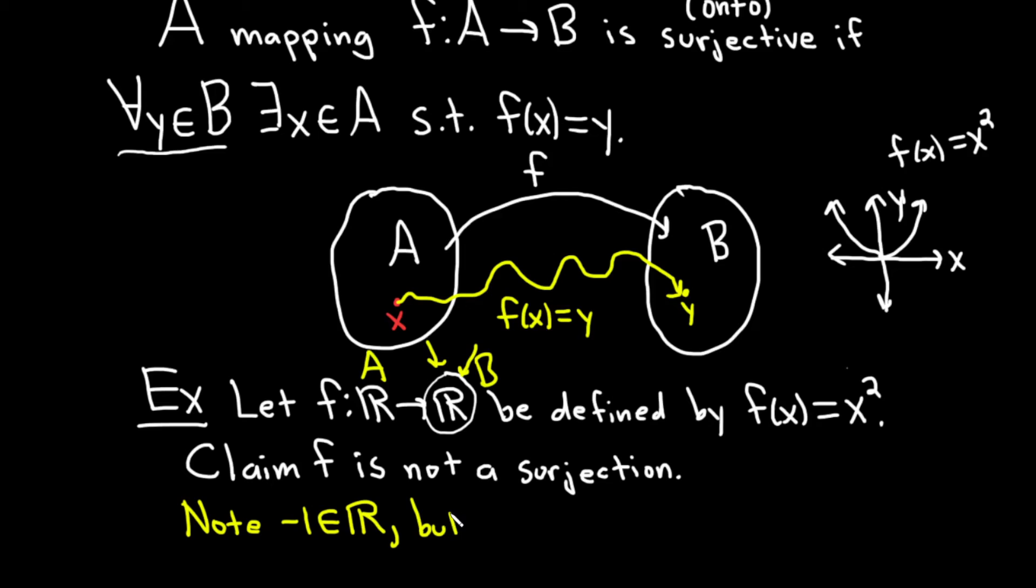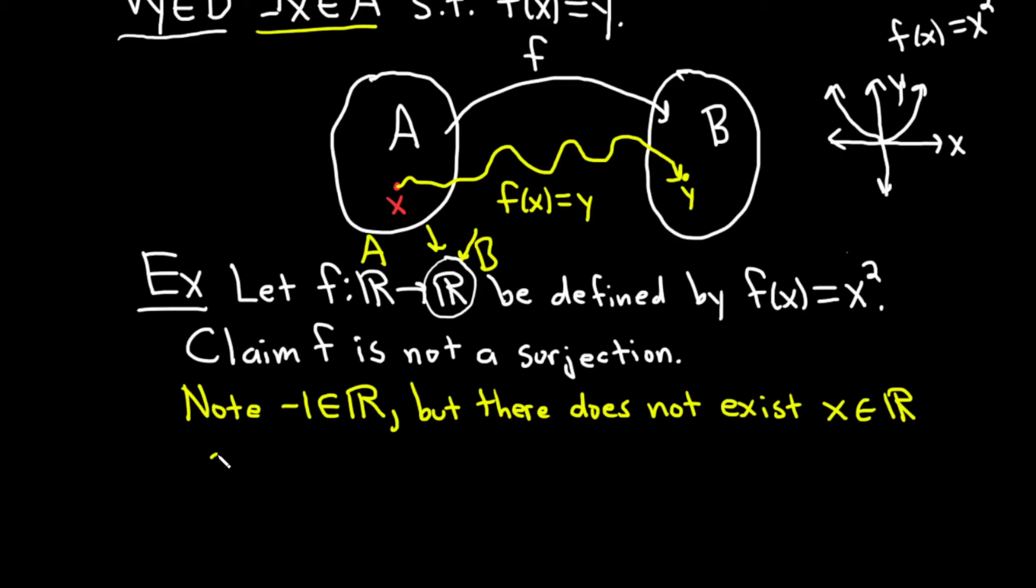But there does not exist, right? You have to say there exists an x in the real numbers, but there does not exist x in R such that, s.t. means such that, f(x), which is equal to x squared, which is equal to negative one. This is never true for any x. So f is not surjective.